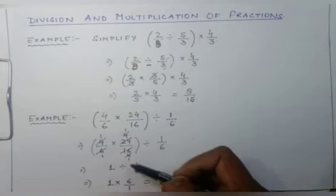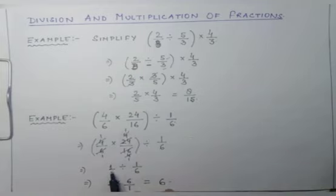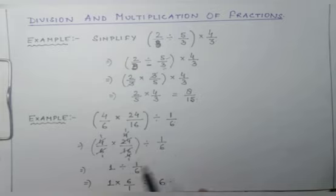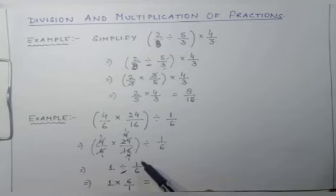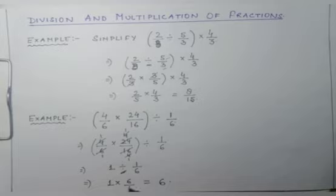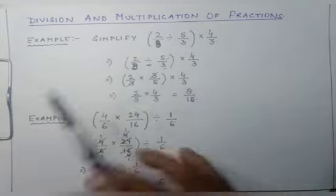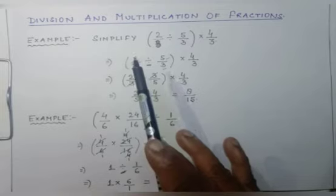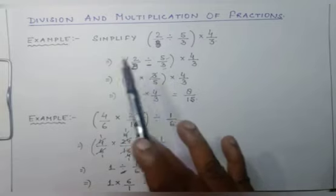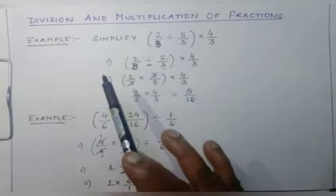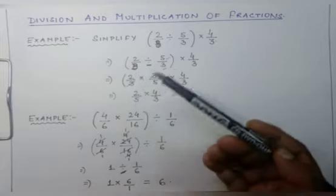After simplification: 4 into 1 over 1 into 4, so what is left is 1. Now 1 divided by 1/6. When I convert this division sign into a multiplication sign, the divisor becomes its reciprocal, so it becomes 1 × 6 upon 1, that is 6. I hope this much is very clear to everyone. The chapter is now finished.